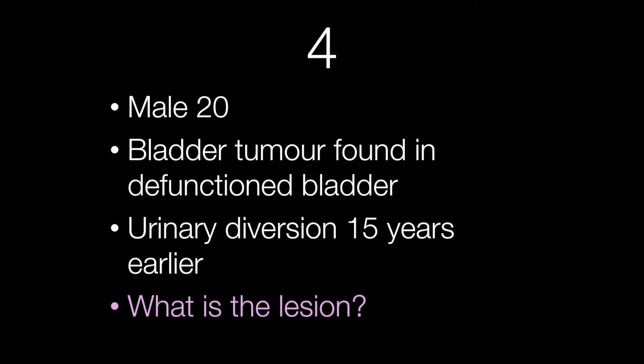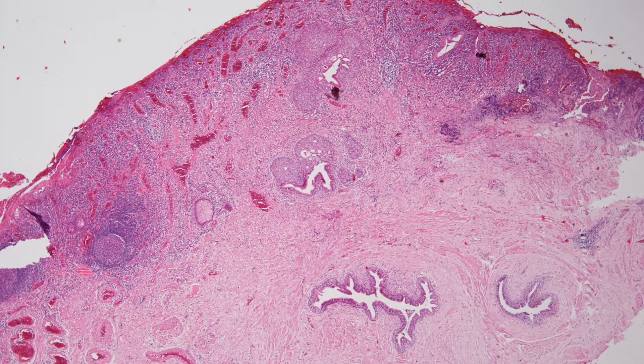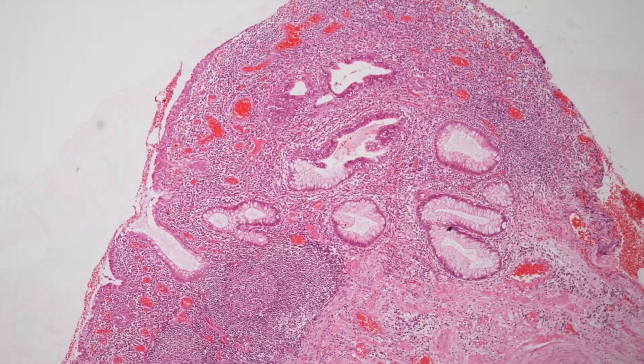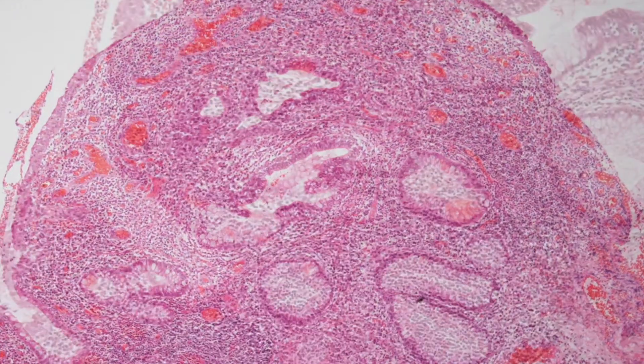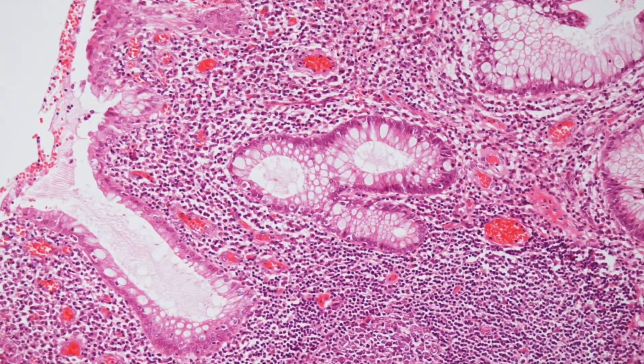Case number four is from a male of 20. He had a bladder tumour found in the defunctioned bladder and had had a urinary diversion 15 years earlier. What is the lesion? Here is a low power overview of the piece of bladder. Here are some higher power views.